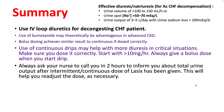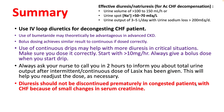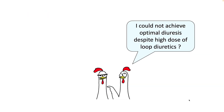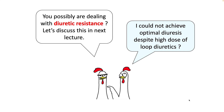Always ask your nurse to call you in a few hours to inform you about urine output so you can change the dose as necessary. Diuresis should not be discontinued prematurely in congested CHF patients because of small changes in creatinine. Be ahead of the curve in anticipating complications of loop diuretics and take appropriate measures to correct them. If you do not get optimal diuresis despite high-dose loop diuretics, you are likely dealing with diuretic resistance — we will discuss this in the next lecture.